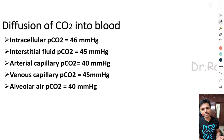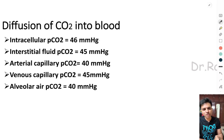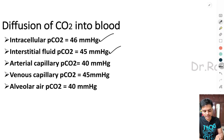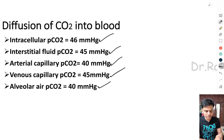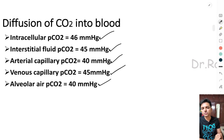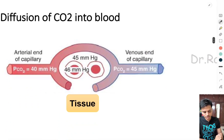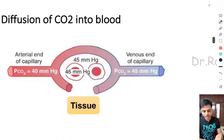To understand diffusion of carbon dioxide into the blood, we need to know the partial pressures at different levels: intracellular PCO2 is 46 mmHg, interstitial fluid PCO2 is 45 mmHg, arterial capillary PCO2 is 40 mmHg, venous capillary PCO2 is 45 mmHg, and alveolar air PCO2 is 40 mmHg.